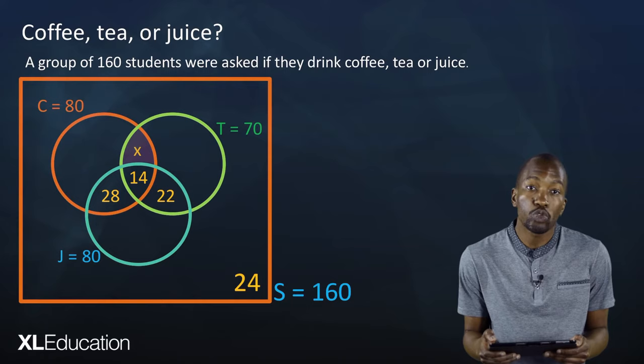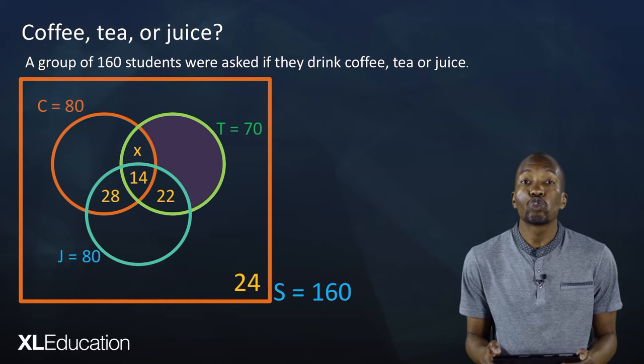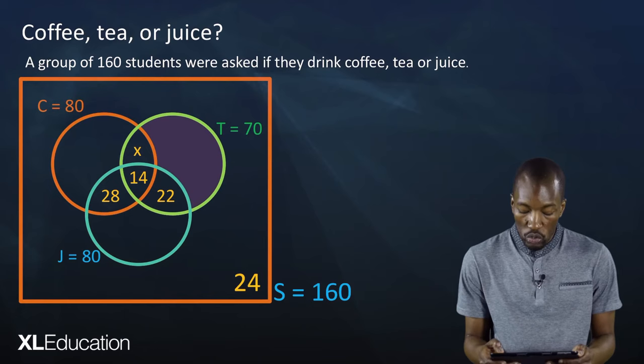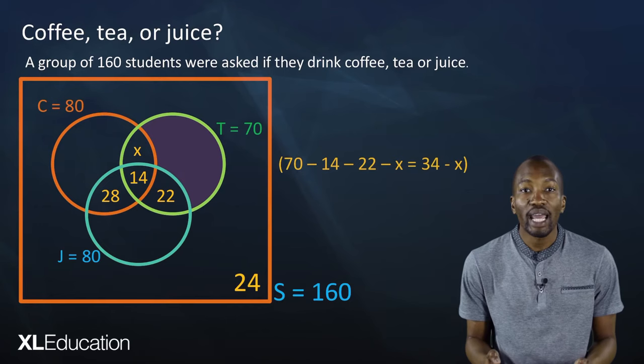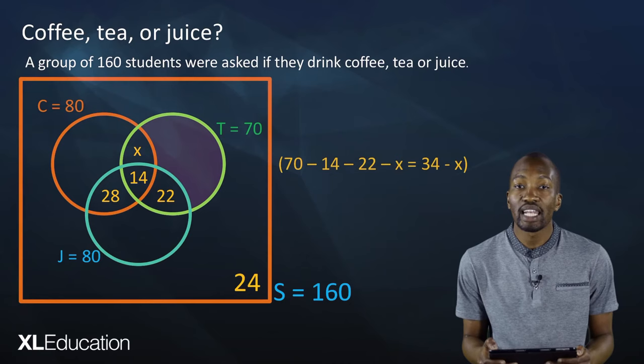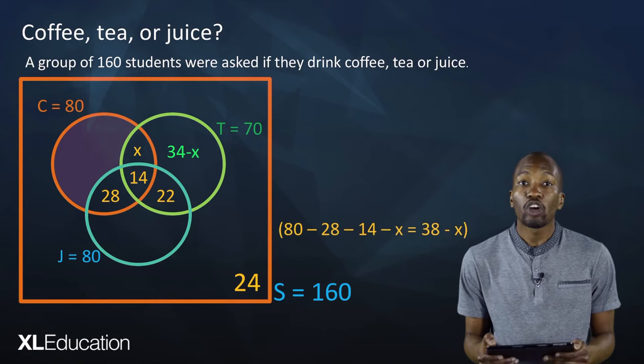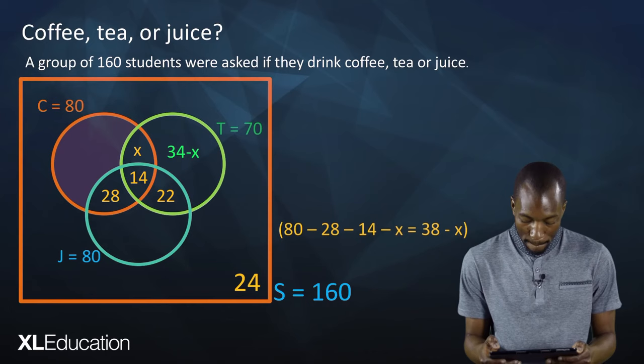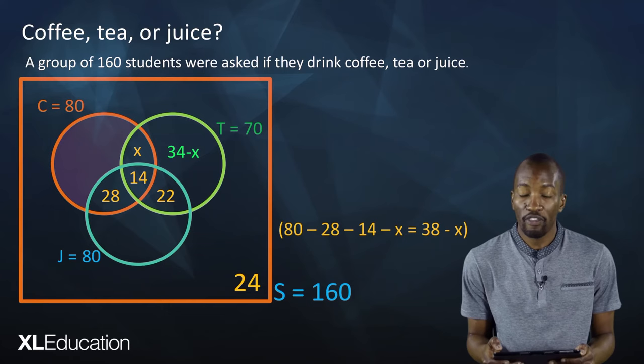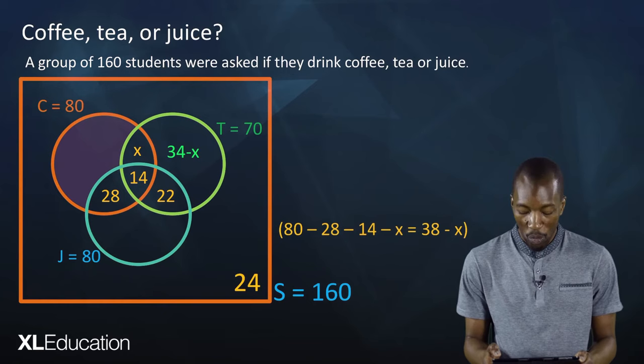How do we find the number of people who drink only tea? Remember, the number of people who drink tea is 70, so we do 70 minus 14 minus 22 minus x, which gives us 34 minus x. This is the number of people who drink only tea. For only coffee: the coffee circle contains 80 people, so 80 minus 28 minus 14 minus x, which simplifies to 38 minus x.